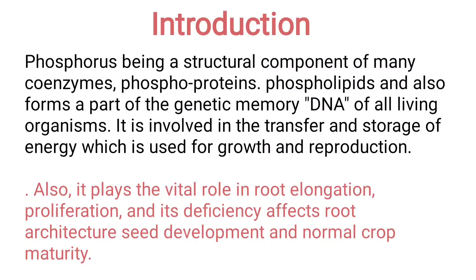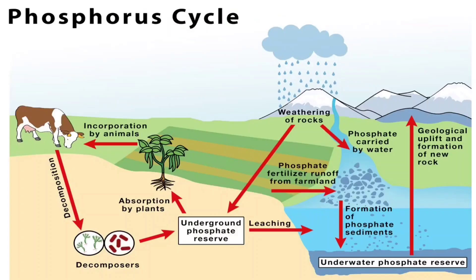It is involved in the transfer and storage of energy which is used for growth and reproduction. Also, it plays a vital role in root elongation, proliferation, and its deficiency affects root architecture, seed development and normal crop maturity. Here is a view of the phosphorus cycle, showing how phosphorus is released and utilized in our atmosphere.